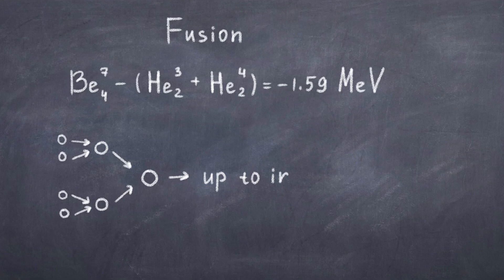Given the right conditions, the atoms start fusing together up until they form iron. After that the process is no longer feasible and the fusion chain stops. This is essentially how stars work.